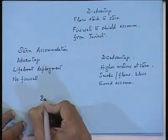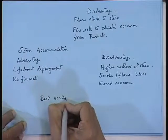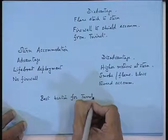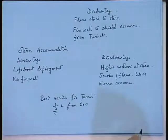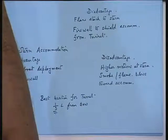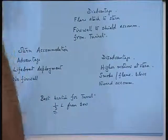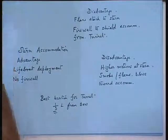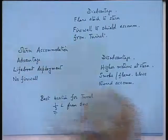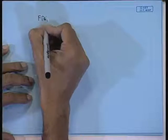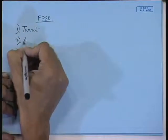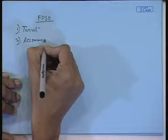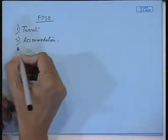The best location for the turret has been found from good design practice to be approximately one-third of L from the bow. In design sequence: first concentrate on turret location, then accommodation, then safety systems, then offloading systems.